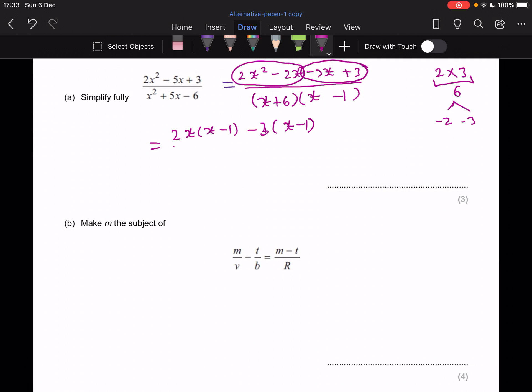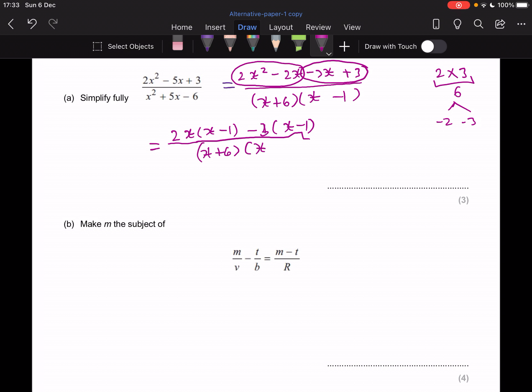And then we've got x plus 6, x minus 1. And let's factorise fully. So (2x minus 3) is one bracket, and then (x minus 1) is the other one. Then I still got x plus 6, and then x minus 1.